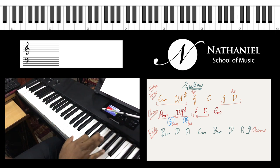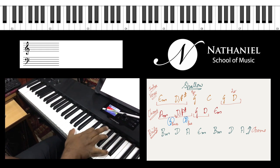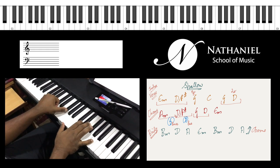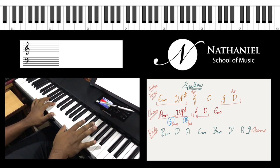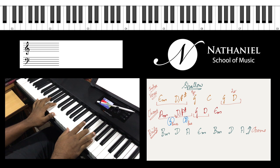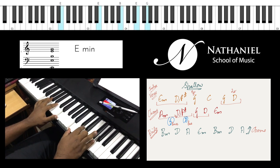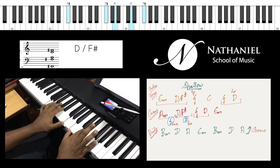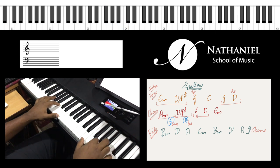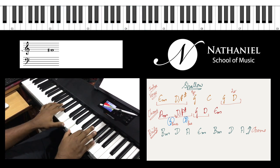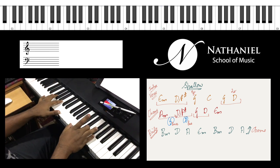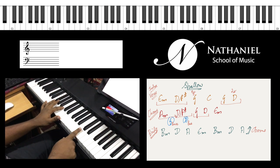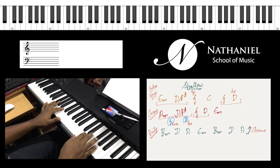So D with F sharp basically means you play a D major chord in the right hand with a F sharp bass in the left hand and the chords in the right hand need to also be a bit close. You don't want to do or you don't want it to be very scattered.